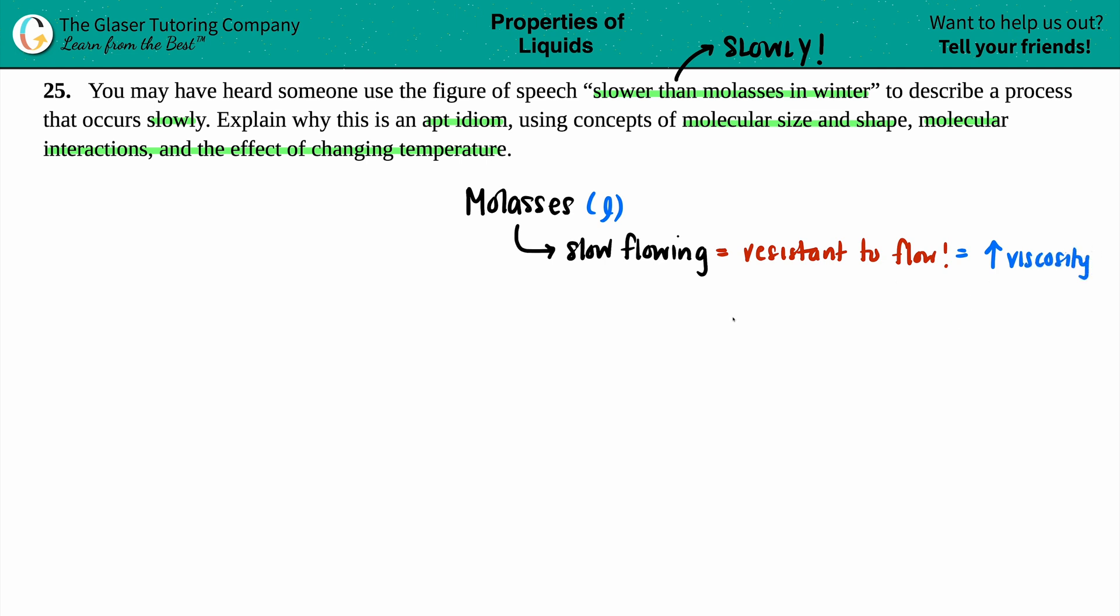Okay. So we now know that molasses has a high viscosity. So we're getting somewhere in terms of molecular interactions and sizes and stuff. Now we bring in the next part of this idiom, molasses in winter. So there is some type of context about the temperature in which this is happening.